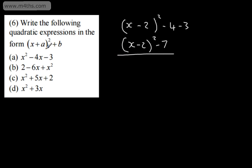So a equals negative 2 and b equals negative 7. It's one of those skills that, once you get used to it, is really quite straightforward.